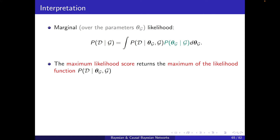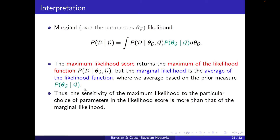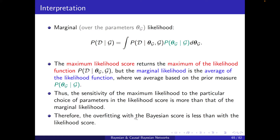The maximum likelihood score returns the maximum of the likelihood function, whereas the marginal likelihood is the average of the likelihood function, averaged based on the prior measure p of theta g conditioned on g. The sensitivity of maximum likelihood to the particular choice of parameters is greater than that of the marginal likelihood, so overfitting with the Bayesian score is less than with the likelihood score.